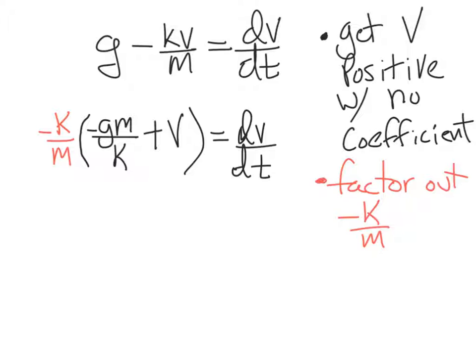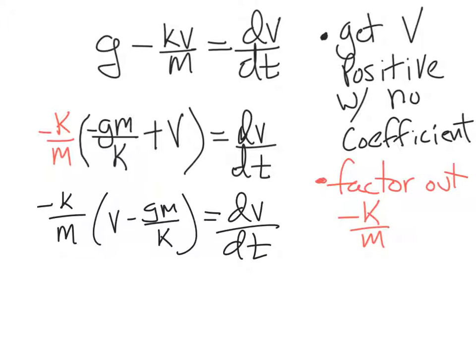So now that we have that factored out, I'm just going to rewrite our equation. Negative k over m. Flip these around so we have v minus gm over k equals dv dt. The next step is to separate the variables, which basically means we're going to move dt over to the left, and we're going to divide by v minus gm over k. So those two terms get flipped. Basically, this is going to move down here, and this is going to move up here. They flip-flop.